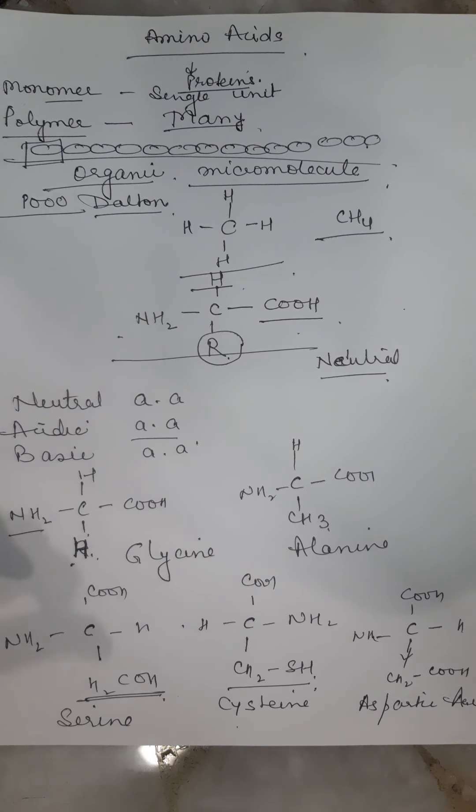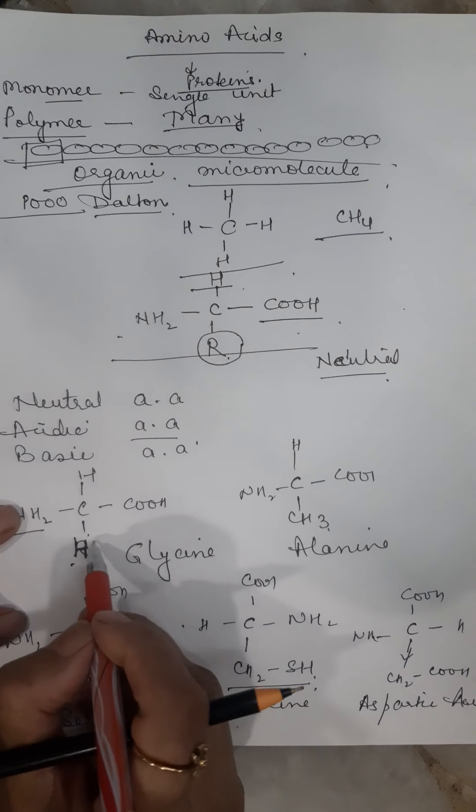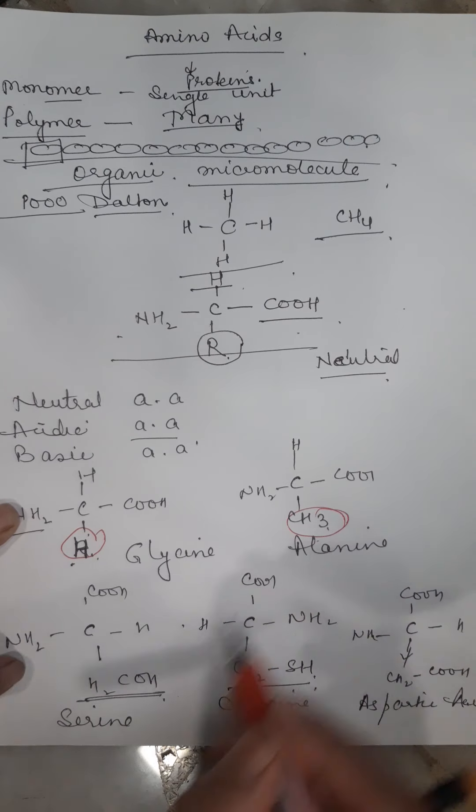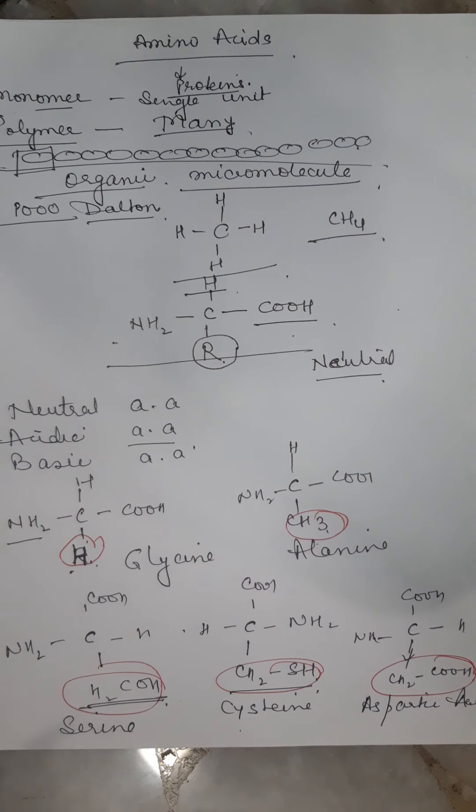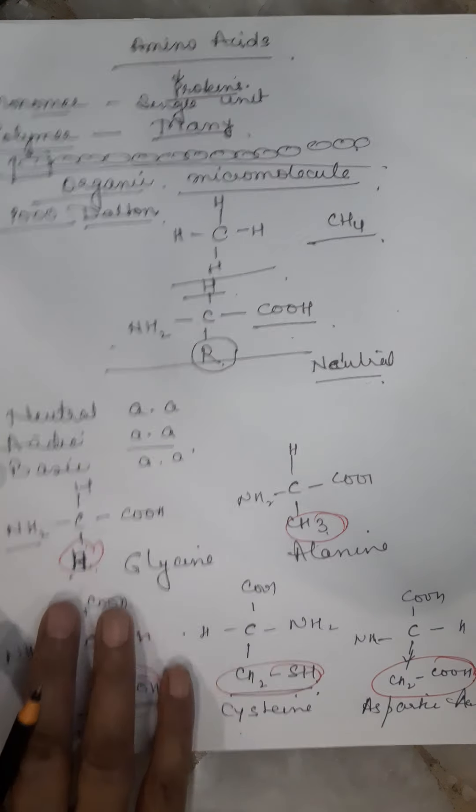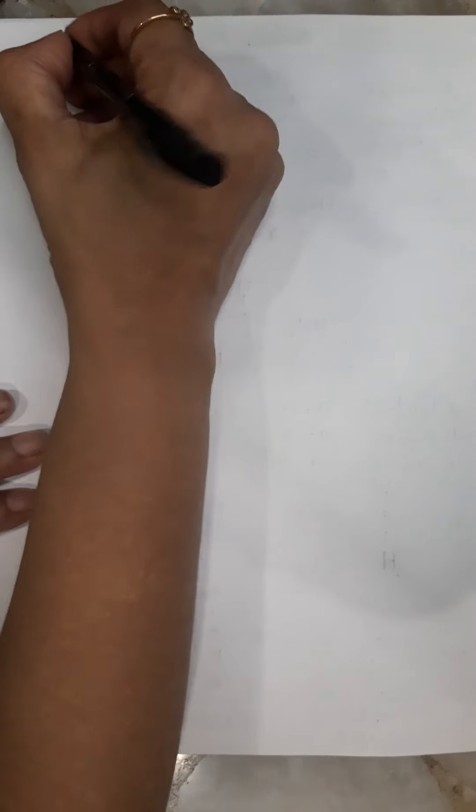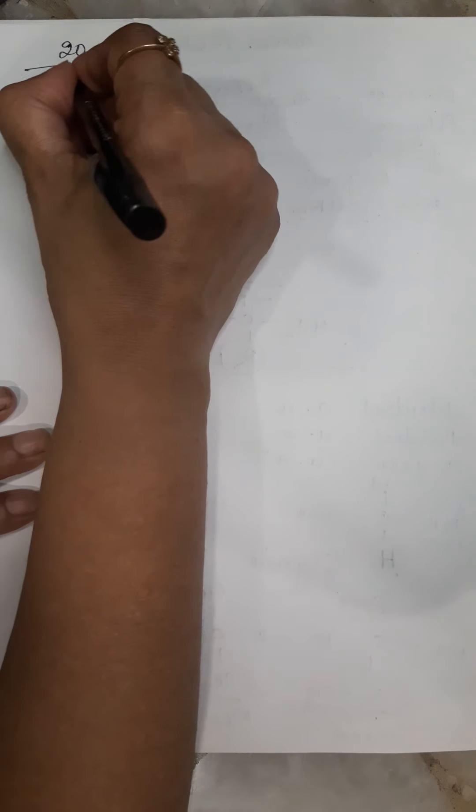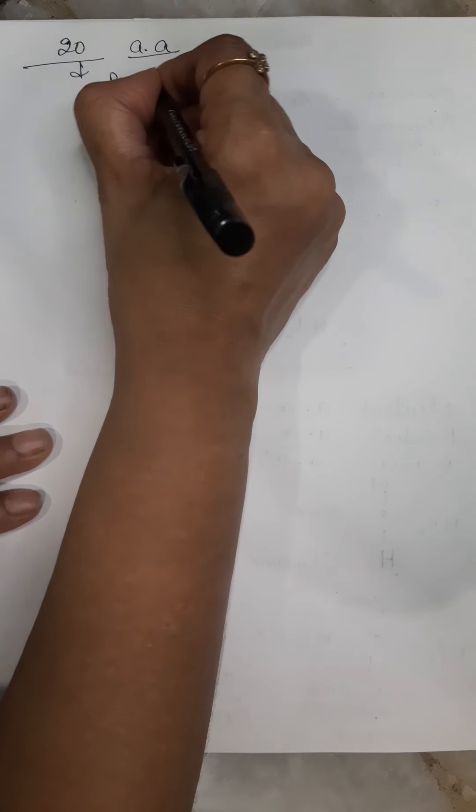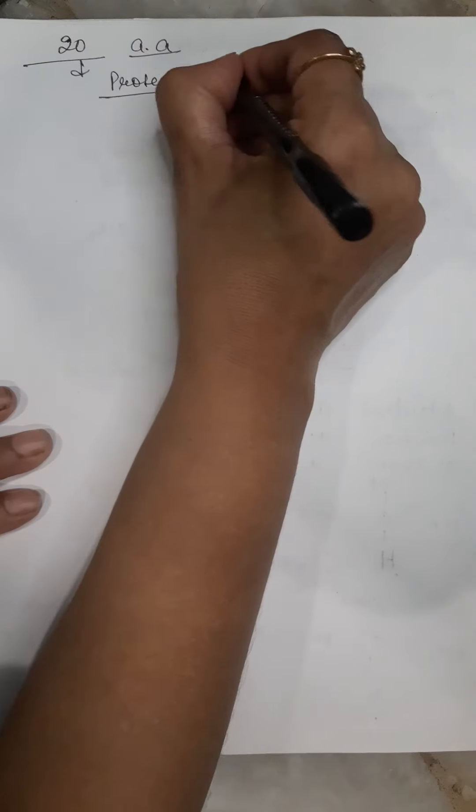So it is very clear that from this R group, we decide the nature of amino acid. There are 20 such amino acids in our body which are responsible for making all the proteins.